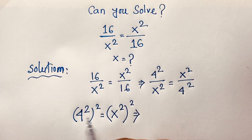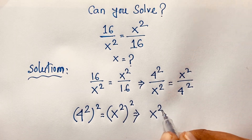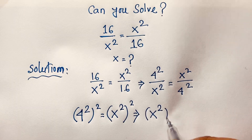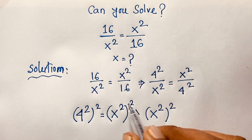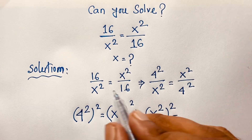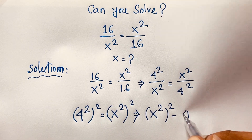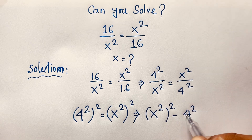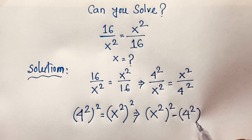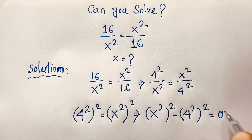Then this expression becomes x to the power 2, bracket power 2, and if we move the other term to this side it becomes negative, so it will be 4 squared bracket power 2, giving us x to the power 4 minus 4 to the power 4 is equal to 0.